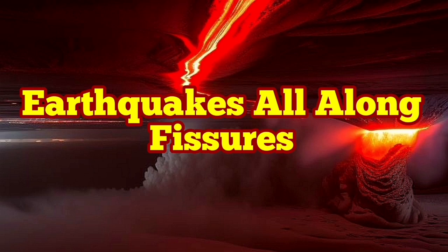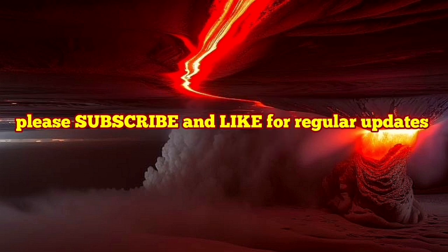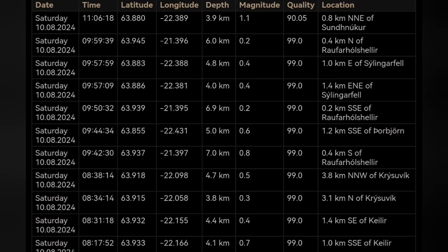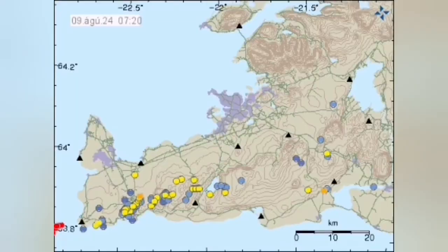We are seeing a line of earthquakes along the fissure, or we should say the dike that is at depth. These are the earthquakes in the Svartseng volcanic system of the Reykjanes Peninsula of Iceland.